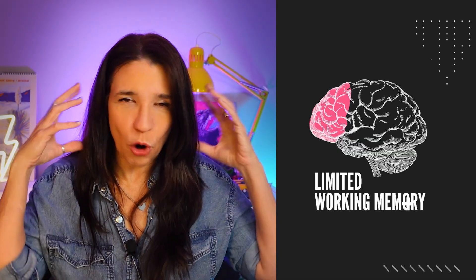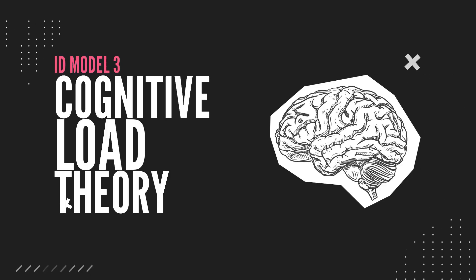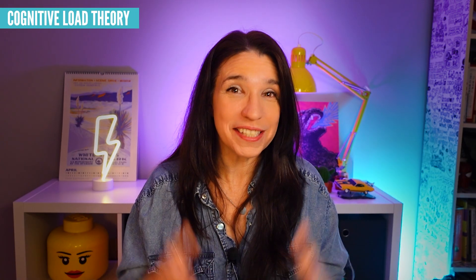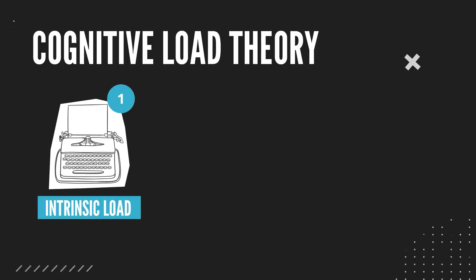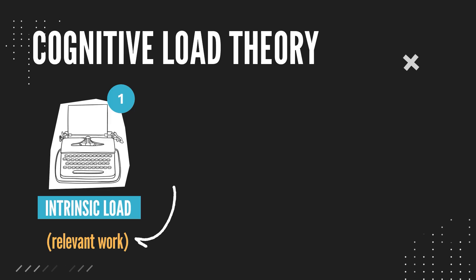Remember how the brain only has limited working memory, and if you overload that, learning can't happen? Well, cognitive load theory goes a lot further than that, and it divides cognitive load into three types. First: intrinsic load — that's the complexity of the content itself. You can't get around that. There is some mental work that goes into learning something; this is the relevant mental work.